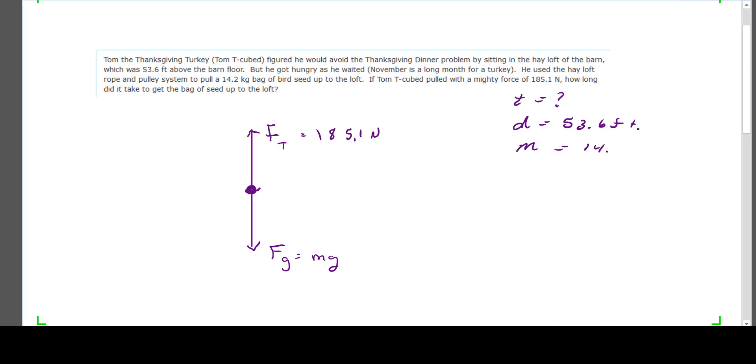So, we have a mass of 14.2 kilograms. Having the mass allows us to find the force of gravity, so we can go ahead and plug that in down below. Mass times little g, negative 9.8, gives us a force of gravity of negative 139.16 newtons.